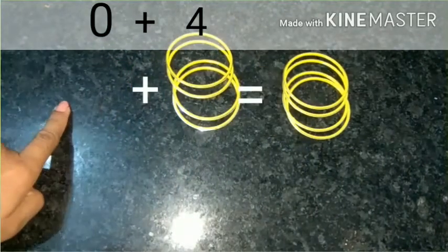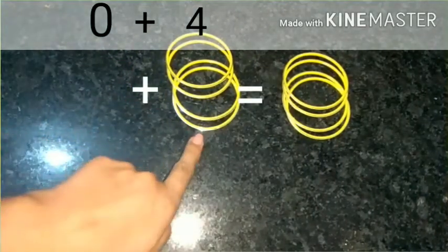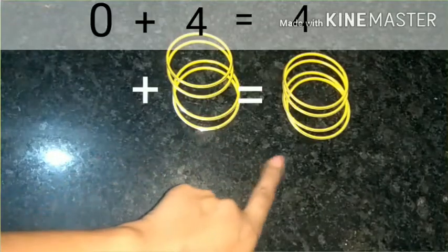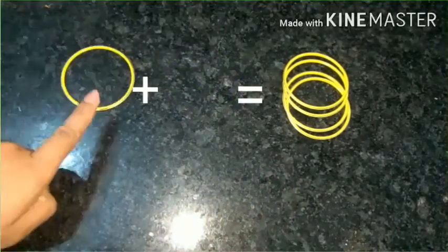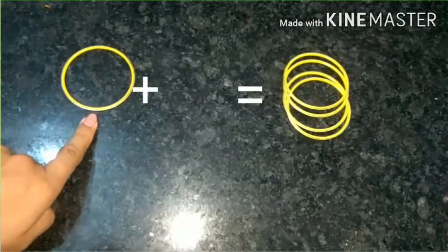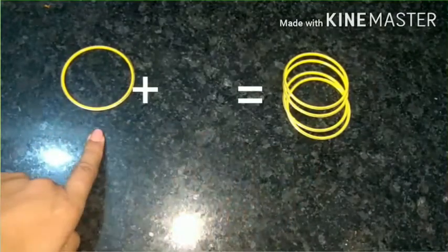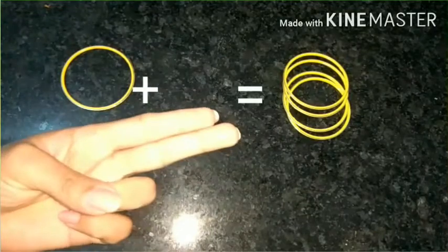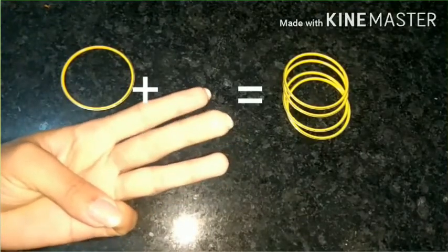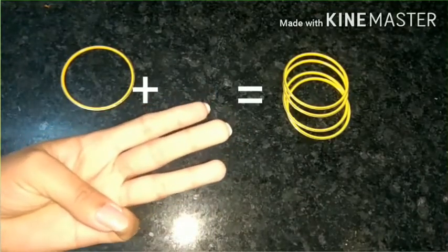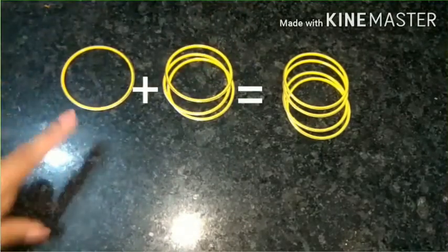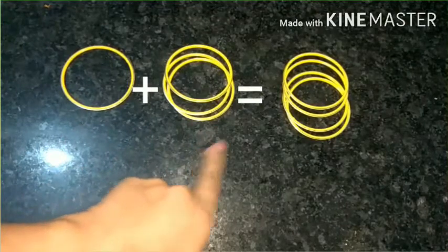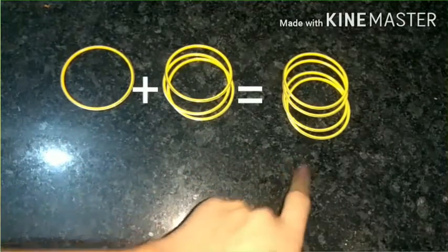Here I am taking one. So after one I will count till four. After one, two, three, four. So I need three more bangles. One, two, three. Now one plus three equals to five.